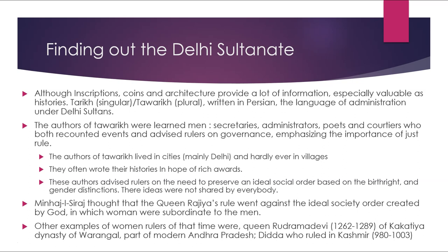Finding out about the Delhi Sultanate: although inscriptions, coins, and architecture provide a lot of information, especially valuable are histories called Tarikh (singular) or Tawarikh (plural), written in Persian, the language of administration under the Delhi Sultans. The authors of Tawarikh were learned men — secretaries, administrators, poets, and courtiers — who both recounted events and advised rulers on governance, emphasizing the importance of just rule. They lived mainly in cities like Delhi and wrote their histories hoping for rich rewards. These authors advised rulers on the need to preserve an ideal social order based on birthright and gender distinctions, though these ideas were not shared by everybody.